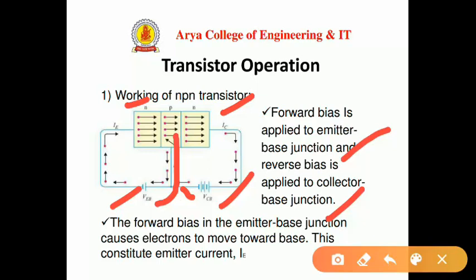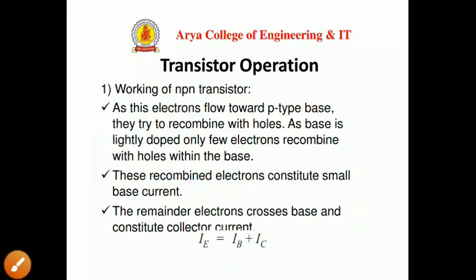The forward biasing of the emitter-base junction causes electrons to move towards the base, constituting emitter current. As these electrons flow towards the P-type base, they try to recombine with holes. Since the base is lightly doped, only a few electrons recombine with holes, constituting a small base current. The remaining electrons cross the base and constitute the collector current.